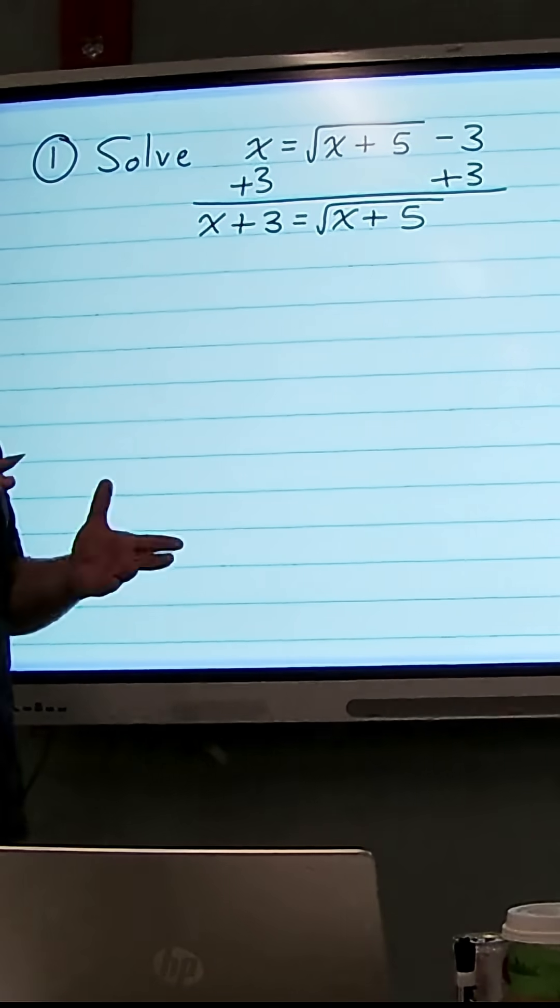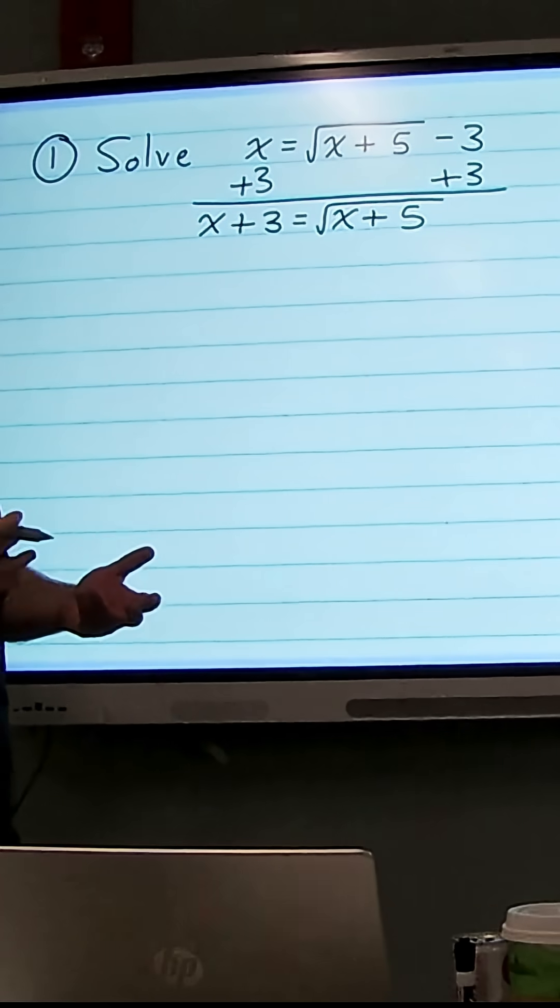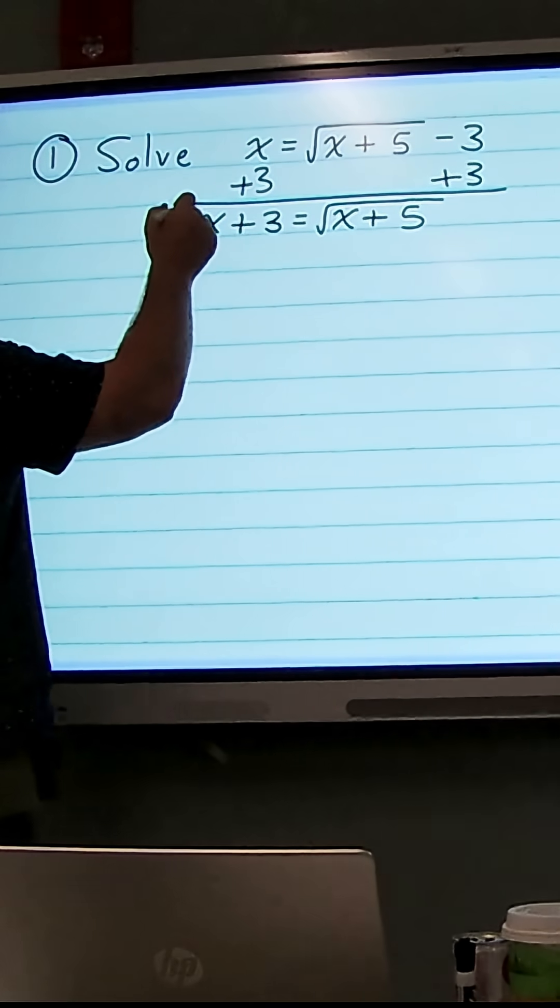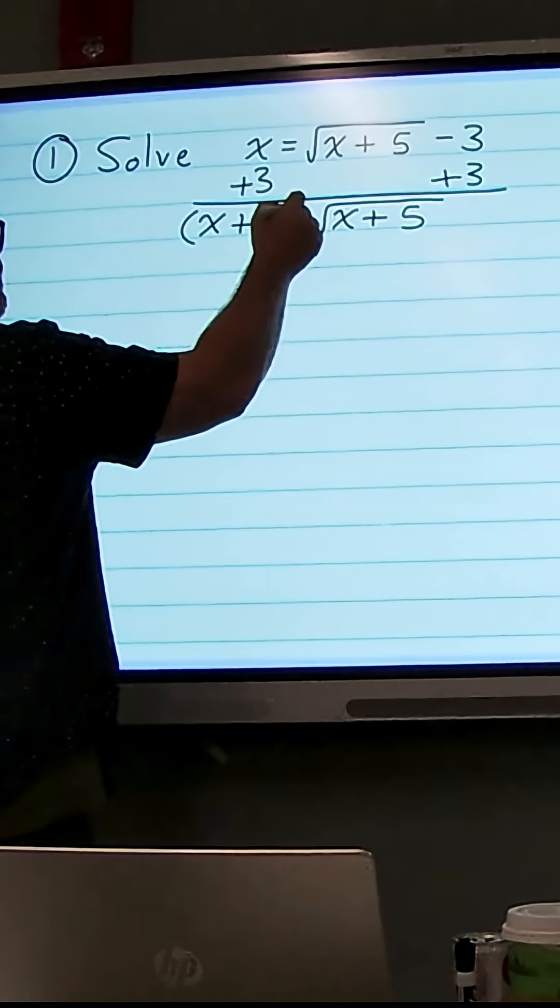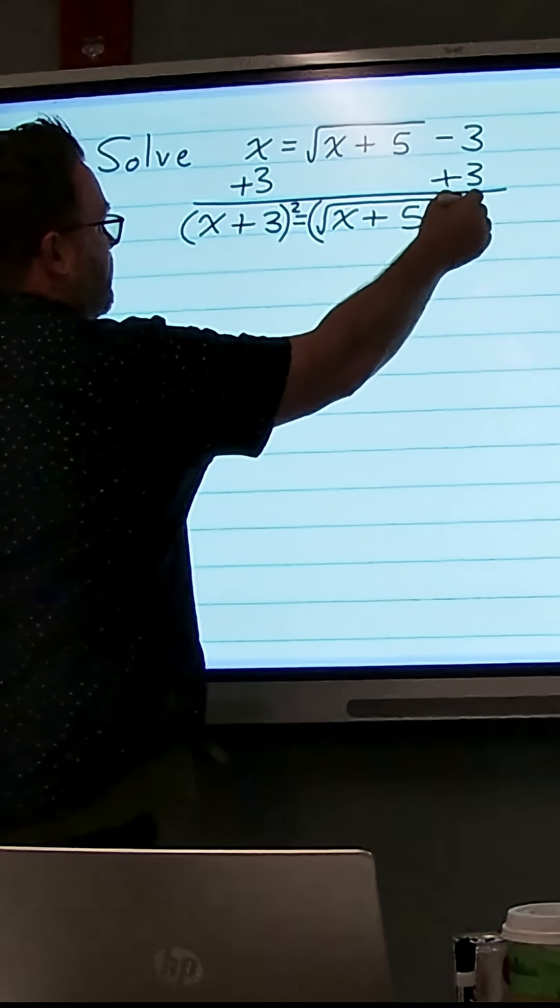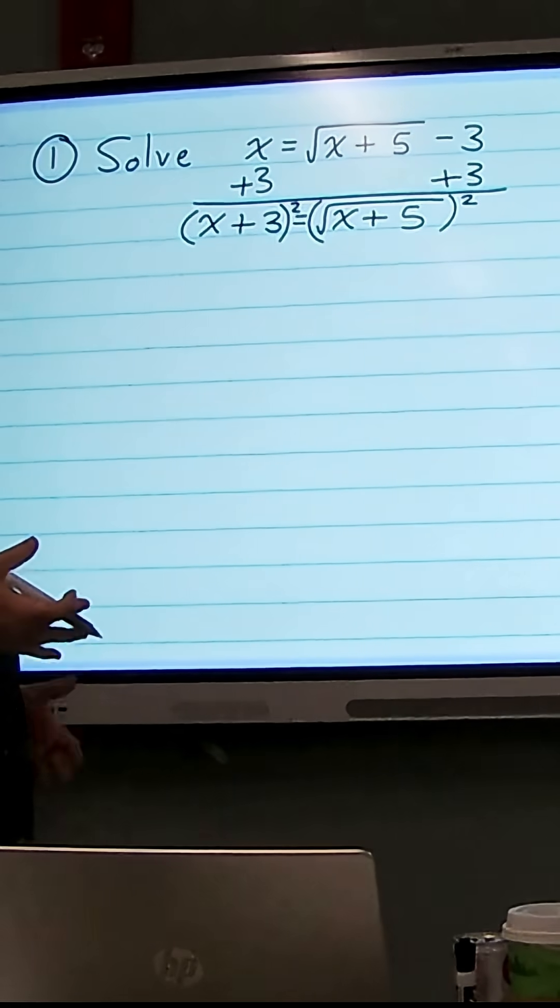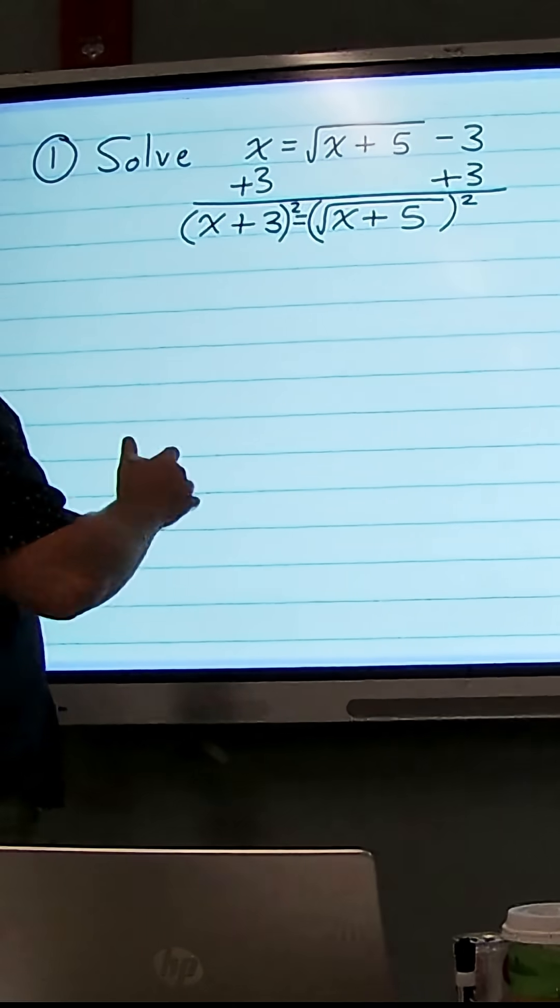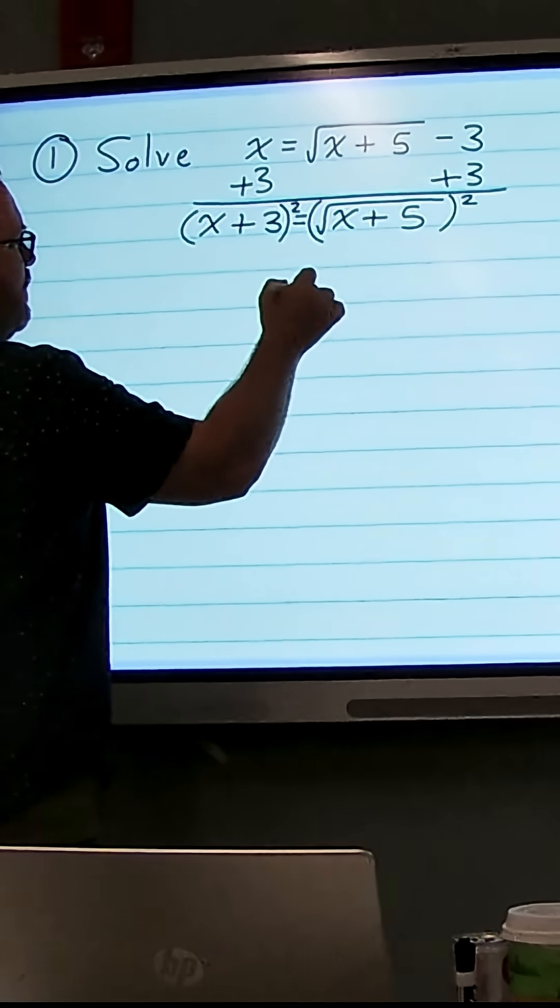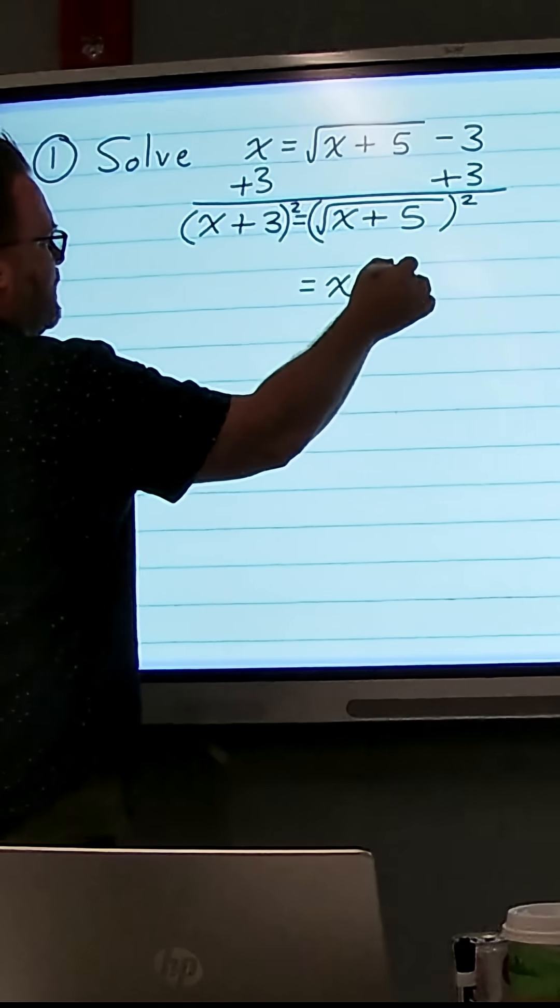Our next step is to get rid of the square root, so to do that we're going to square both sides. So I'm going to square x plus 3, and I'm going to square the square root of x plus 5. Now when you square a square root, it just undoes the square root, so we're left with x plus 5 on the right.